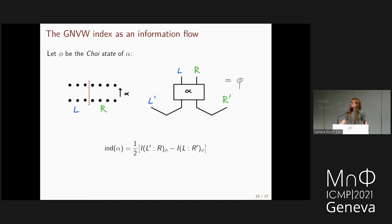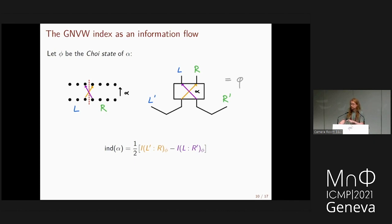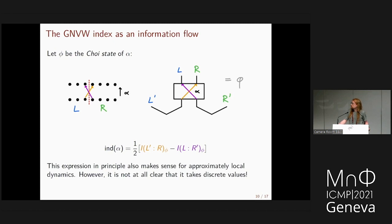More precisely, the index can be defined via the Choi state of α applied to half of a maximally entangled state, then measuring mutual information across the two partitions of the cut chain. This gives the interpretation of information moving left minus information moving right. For approximately local dynamics this formula is still well-defined, but it's not clear it takes discrete values — something further needs to be done.